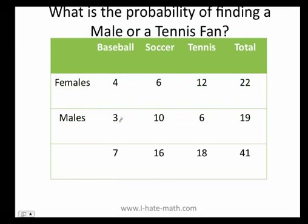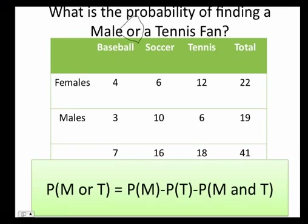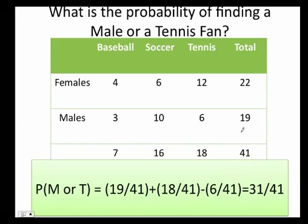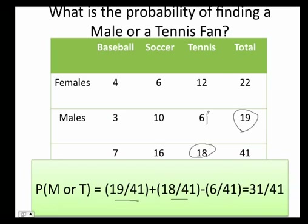Now let's do the fun part. What is the probability of finding a male or a tennis fan? Remember, we have the keyword OR. We know this is a non-mutually exclusive event because you can be a male and a tennis fan at the same time. The probability of a male or tennis fan equals probability of male plus probability of tennis fan minus probability of being a male and tennis fan at the same time. That's 19 over 41, plus 18 over 41, minus 6 over 41. So 19 plus 18 minus 6 equals 31 over 41.